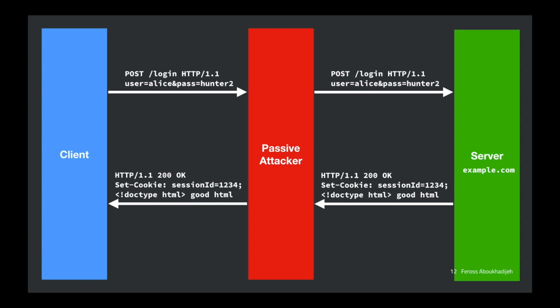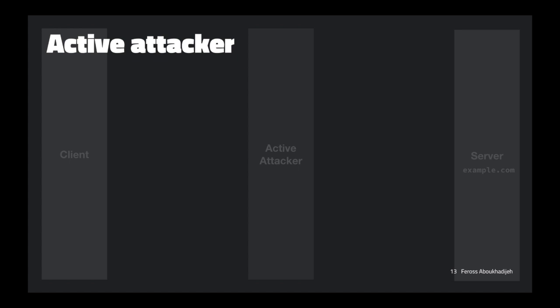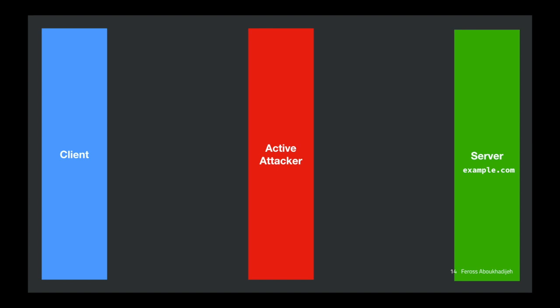There's an even worse situation: an active attacker who's willing to actually modify the requests and responses. It's a little harder to pull off, but there's out-of-the-box software you can install on a router. You can set this router up at a coffee shop, and whoever connects to it will be subject to your active code.